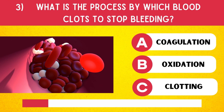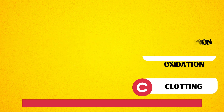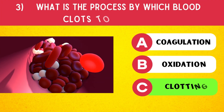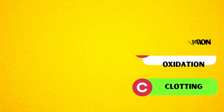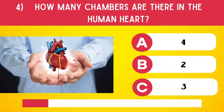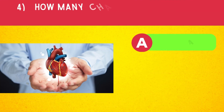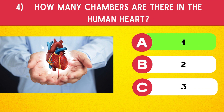What is the process by which blood clots to stop bleeding? Clotting. How many chambers are there in the human heart? 4.